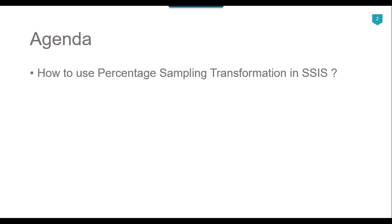Percentage sampling transformation is especially used for data mining. So if you have a very large table and you need some small sample data from a very large data set, then you can use the percentage sampling transformation. It can give you some random small data set from the large data set, and that small data set can be used for SSIS package development or for testing SSIS packages.